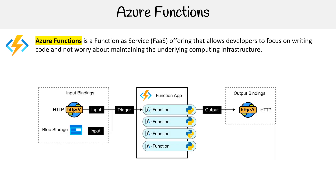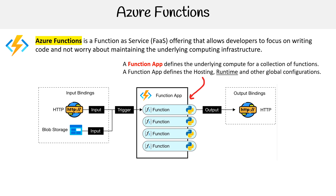Here is our visualization, so we can break down the anatomy of how Azure Functions work. The first thing you'll need is a Function App, which defines the underlying compute for a collection of functions. A Function App defines the hosting runtime and global configurations.